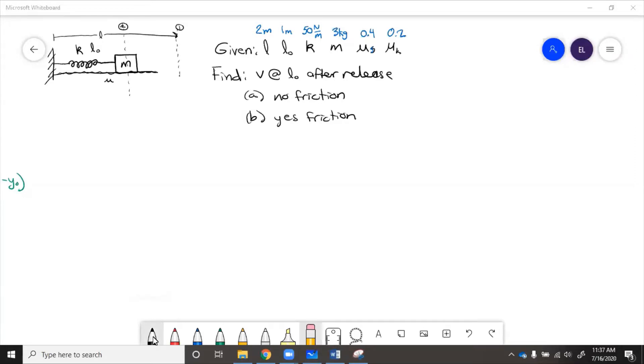So we start by drawing a free body diagram. We have the mass, so we've got weight mg, normal force going up. We'll have the spring force, k times L minus L initial. And then if there is friction, we'll have the friction force. Then x needs to be in the direction of motion. So we can say that x goes this way.